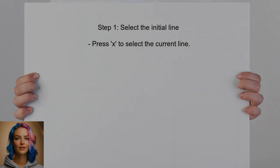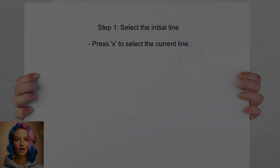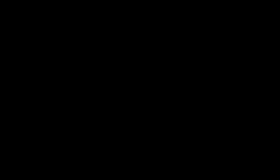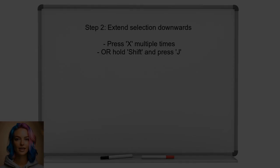To select multiple lines going upwards in Cocoon, first select the initial line by pressing the X key — this will start the selection process. Next, to extend the selection downwards, press the X key multiple times or hold down the Shift key while pressing J. This allows for easy downward selections.